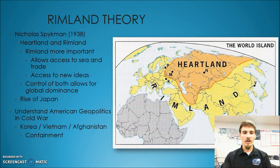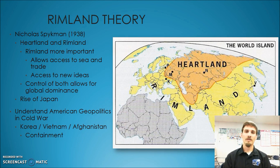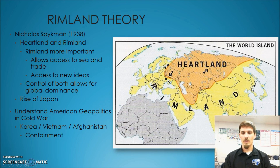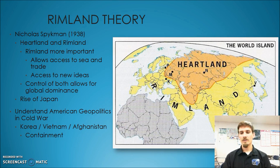We look at the rimland and Spykman uses the rimland to explain the rise of Japan. We also use this idea of rimland to understand American foreign policy moving into especially the Cold War, because if you think of the places where there were issues and conflict right after World War II — first we had Korea, then it was in Vietnam, and you also had a conflict in Afghanistan — and you notice that all of those are in the rimland area, and so this kind of flows into that notion of containment.